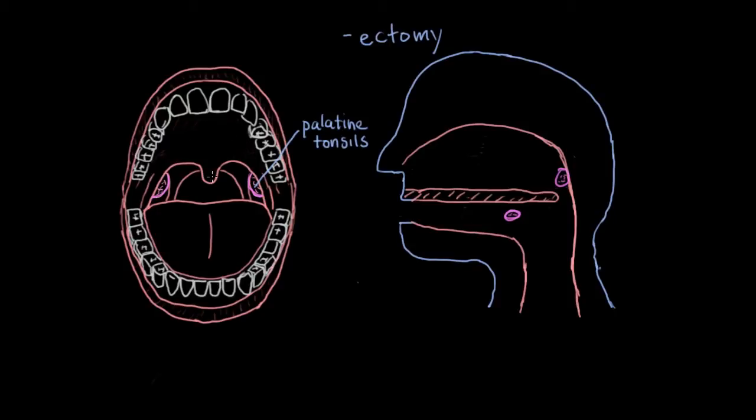But if a tonsillectomy is removal of these tonsils, what is removal of these tonsils? Well, these are actually referred to as the adenoids. They have another name known as the pharyngeal tonsils, but they're most commonly referred to as the adenoids. In fact, the removal of the adenoids is known as an adenoidectomy. Commonly, many patients get both the tonsils and the adenoids removed, so these are actually two procedures done at the same time.